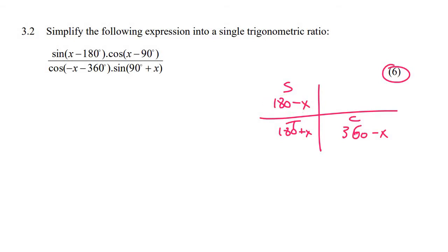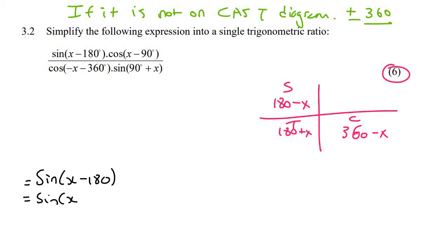What we do, now remember the golden rule: if it is not on CAST diagram, you can add or minus 360 as many times as you need to until it is on the CAST diagram. So for example, the sin of x minus 180, I can simply add 360 to that.